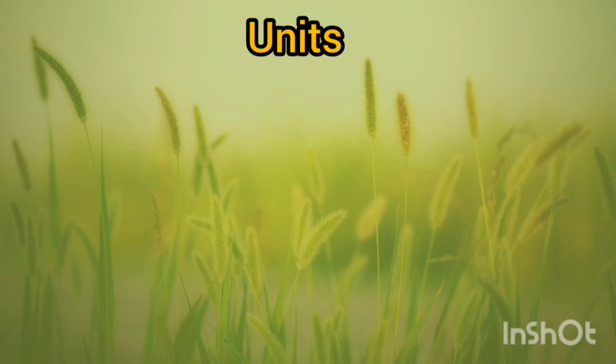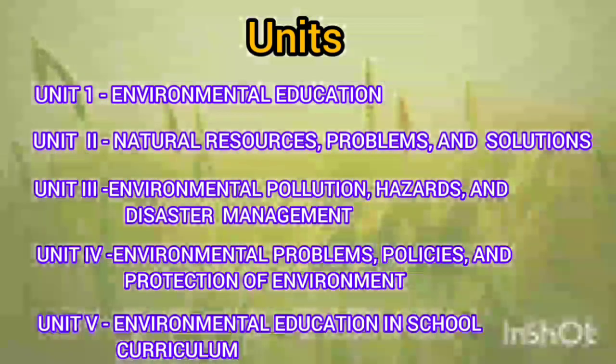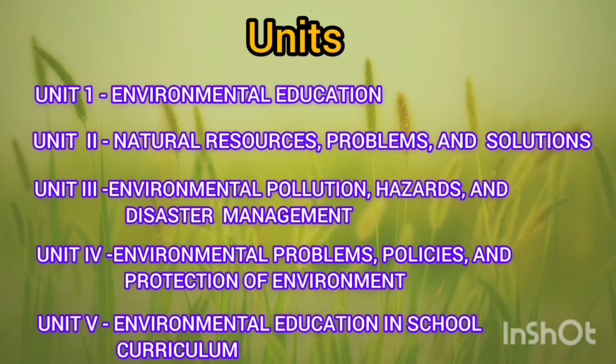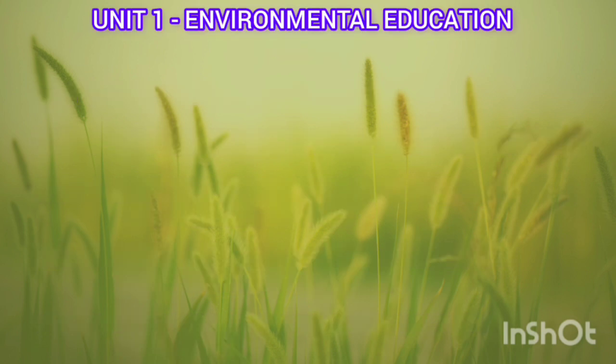There are five units in environmental education. Unit one is environmental education. Unit two is natural resources, problems and solutions. Unit three is environmental pollution, hazards and disaster management. Unit four is environmental problems, policies and promotion of environment. Unit five is environmental education in school curriculum. Now let us see each and every unit.